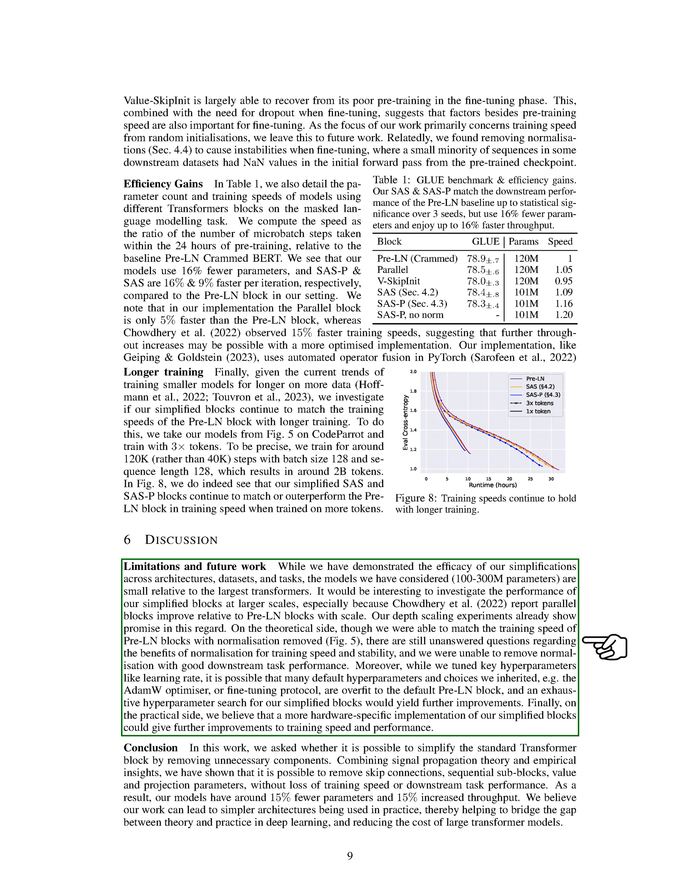On the theoretical front, we've managed to match the training speed of pre-LN blocks even after removing normalization. However, there are still some unresolved issues. For instance, we're not entirely sure how normalization contributes to training speed and stability. We also found that we couldn't remove normalization without negatively affecting the performance of downstream tasks. Additionally, while we adjusted important hyperparameters like the learning rate, we may have overlooked some default hyperparameters. For example, we used the AdamW optimizer and a fine-tuning protocol that might be too closely tailored to the default pre-LN block. A more thorough search for hyperparameters for our simplified blocks could lead to further improvements. Lastly, from a practical standpoint, we believe that tailoring our simplified blocks to specific hardware could enhance training speed and performance even more.